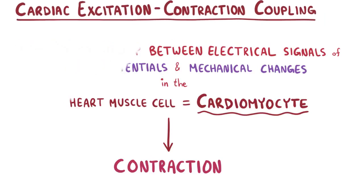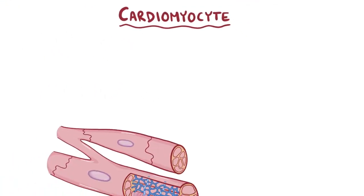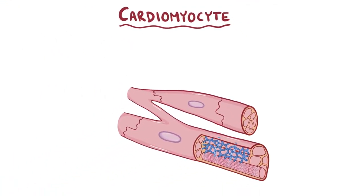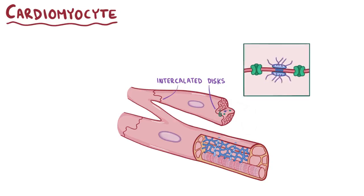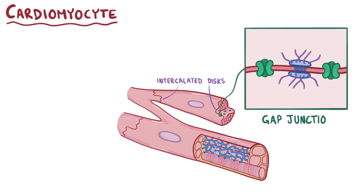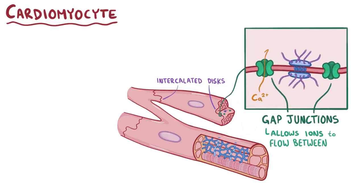Let's start off by looking at the structure of a cardiomyocyte. Cardiomyocytes have branches, as well as intercalated discs along their edges which have small holes called gap junctions that allow ions to flow from one cardiomyocyte to the next.